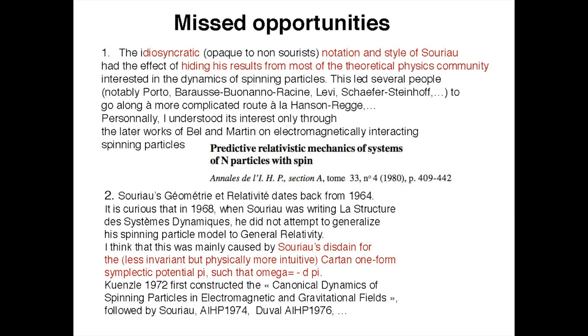I think this is caused by Souriau's disdain for the symplectic potential — the Cartan one-form — because each time he says: the Cartan one-form is not invariant, while the symplectic form is invariant, which is true. But physicists are used to being invariant modulo a total derivative, and the Cartan one-form is the action — the Hamilton-Lagrange action — and therefore for most of physics, this is the interesting object to start with.